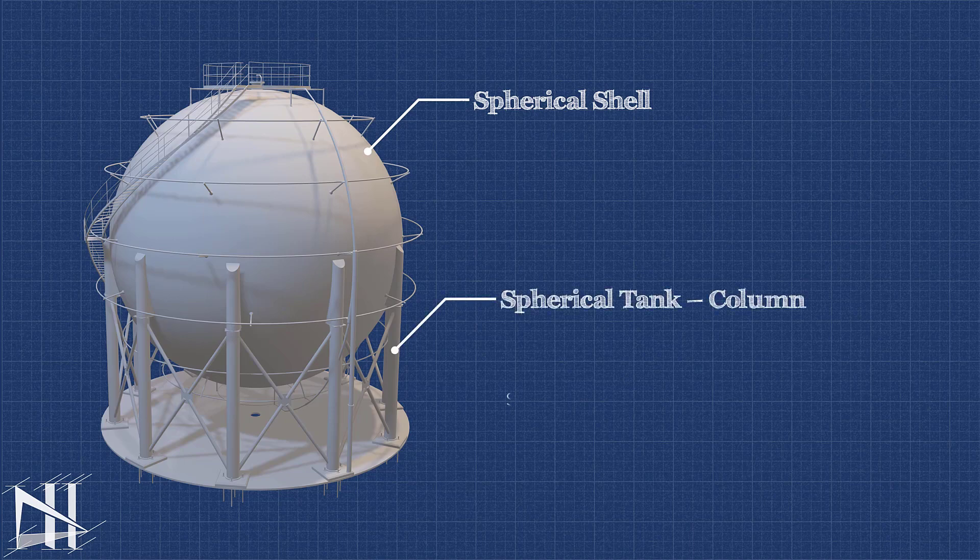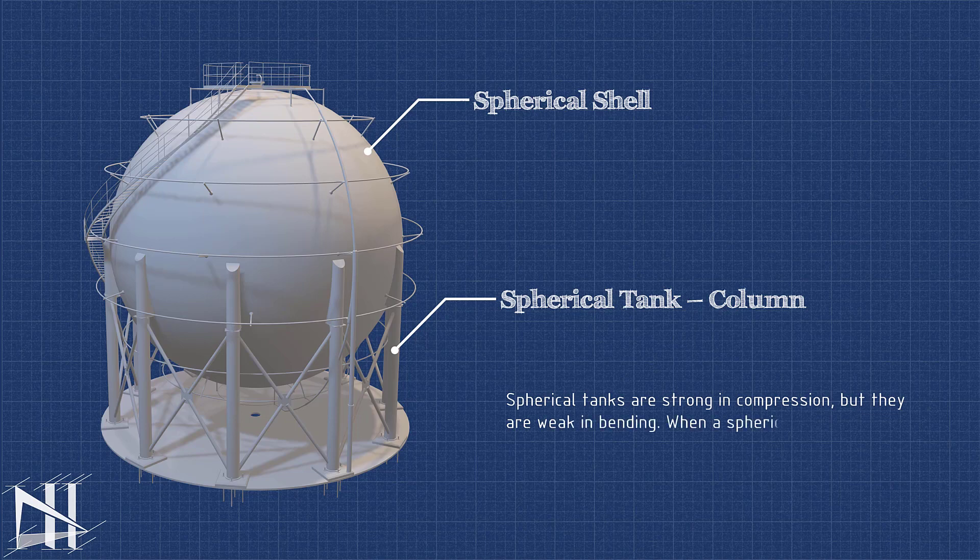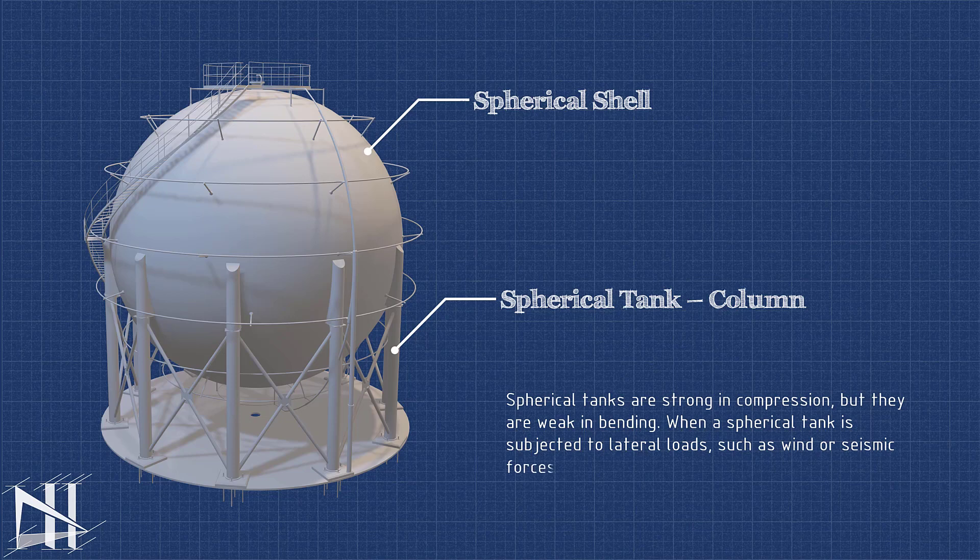Let's talk about spherical tank columns. Spherical tanks are strong in compression and can handle lateral loads like wind or seismic forces, but they cannot handle buckling well. That's why columns are used to support the tank, distribute the load to the ground, and prevent the tank from buckling.